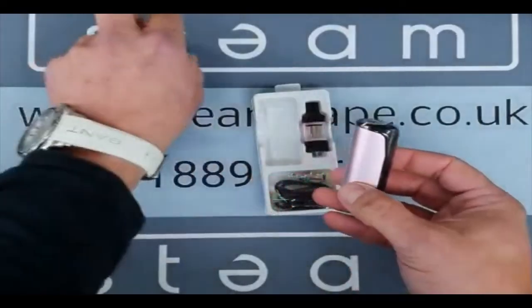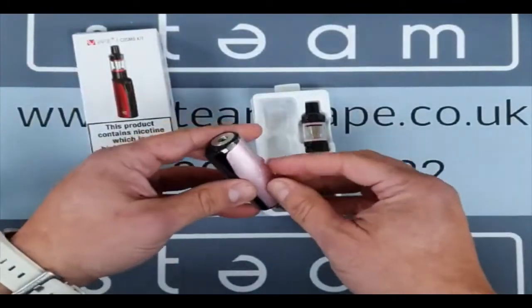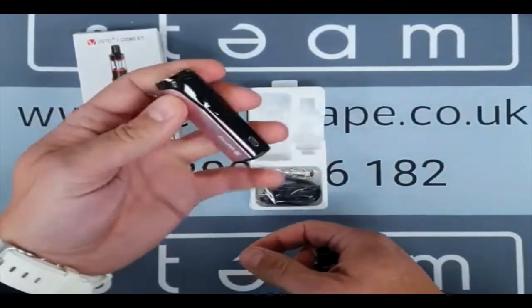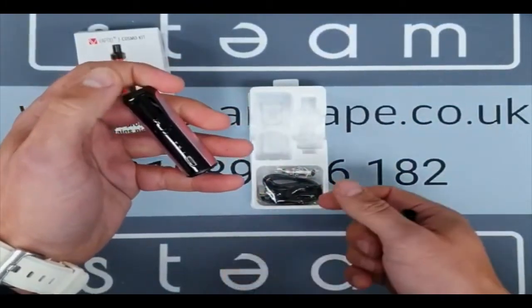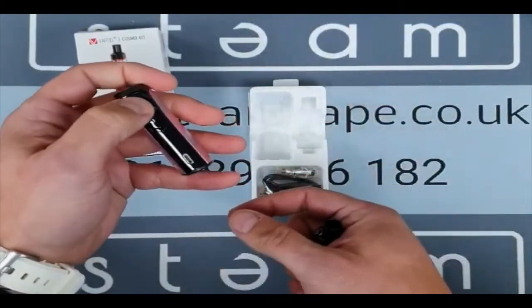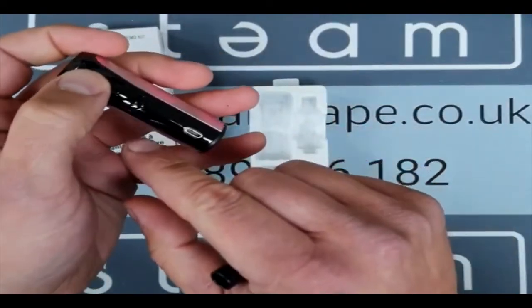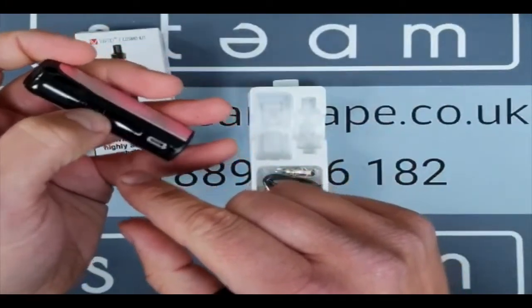So just to give you an idea, milliamps are the measure of basically how long a battery will last on a full charge. Obviously five times to turn it on and five times to turn it off. You've got three settings. You can see that: high, medium, and low.